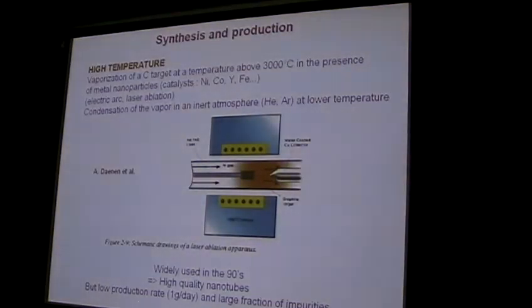About synthesis and production — very briefly for information — there are two main approaches to make carbon nanotubes. The first one consists in the vaporization of a carbon source, such as graphite, at very high temperature using a laser or an electric arc. When the carbon condenses in the presence of metal nanoparticles, you can observe the growth of carbon nanotubes. The graphite is vaporized with laser energy and then cooled down on a piece of copper, where you collect the carbon nanotubes.